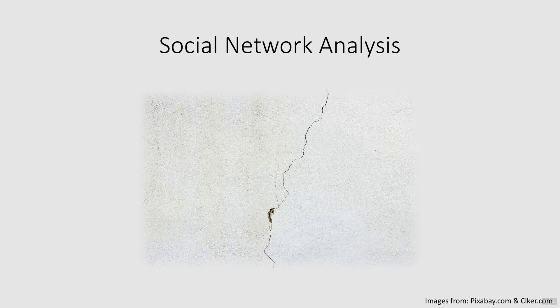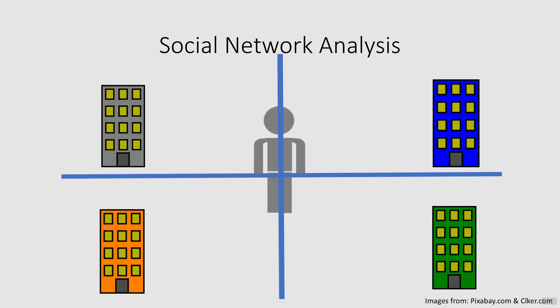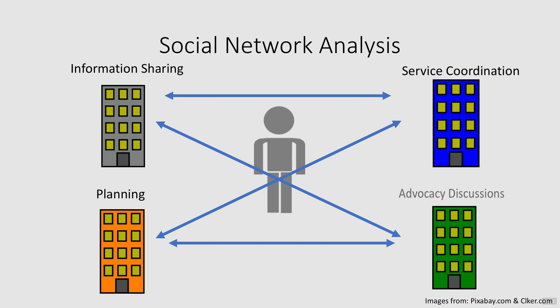Wicked problems are often wicked because there are so many cracks within our system that prevent it from fully functioning. Improving systems means moving towards one in which organizations streamline their services around their client, rather than the traditional silo approach. To help shift towards systems thinking, social network analysis can be employed to reflect on the organizations involved in systems and the degree to which those organizations are functioning as a system. Social network analysis utilizes a set of powerful tools for understanding and visualizing the patterns of interactions that occur within and between different types of actors — in this case, the various organizations. It can determine how organizations are interacting and communicating around key themes of interest, as well as identify key organizations involved in information sharing, service coordination, planning, and advocacy discussions.